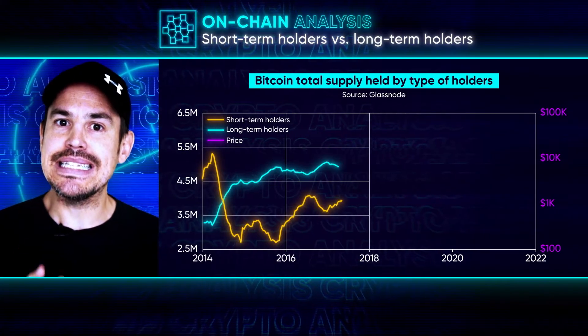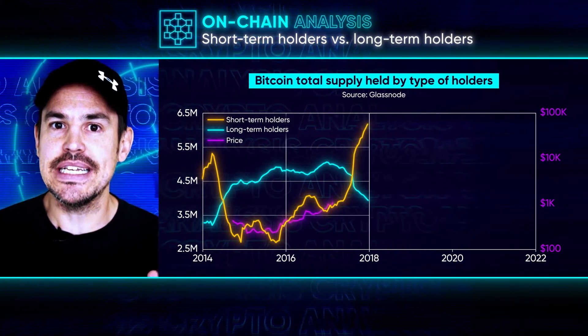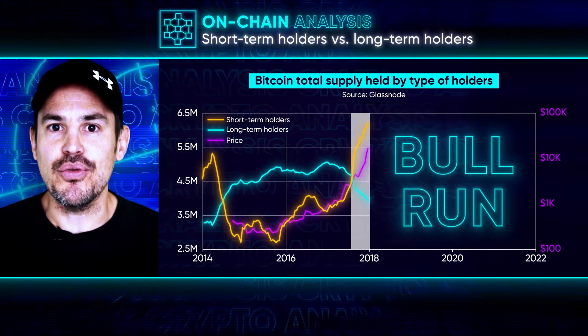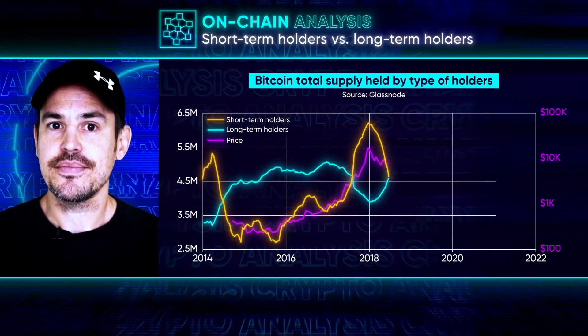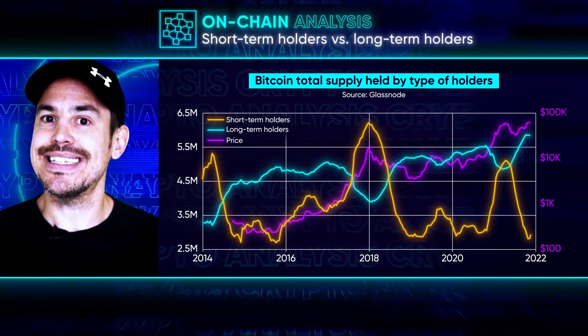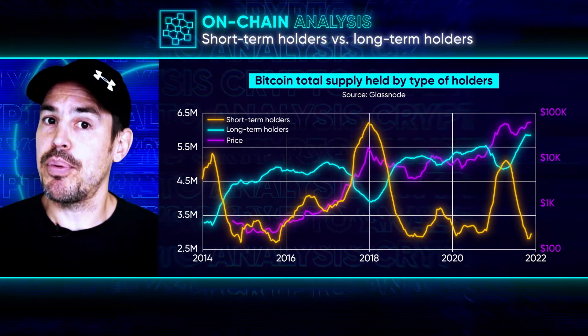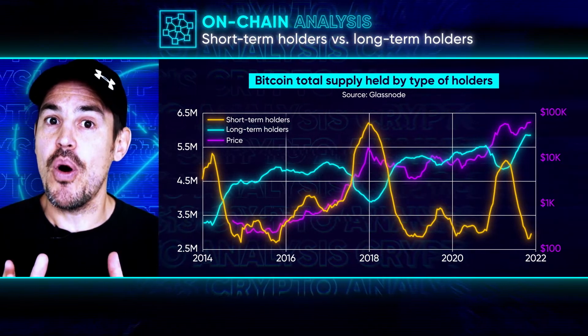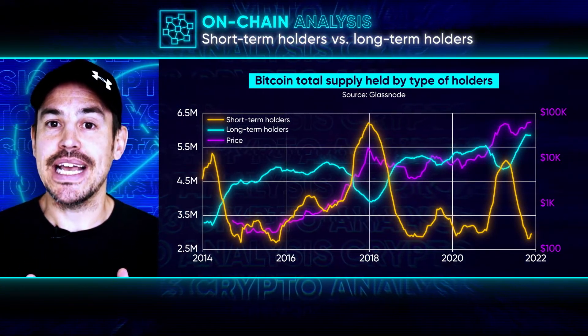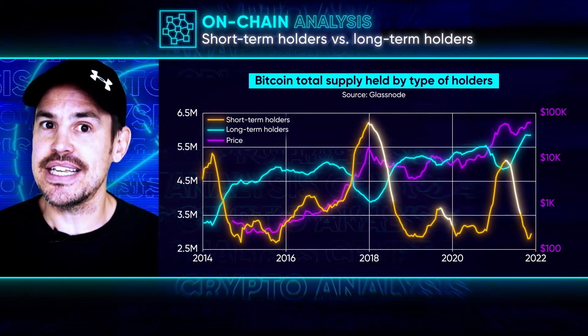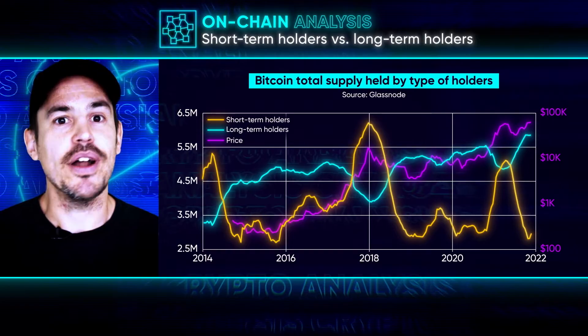We can see from previous cycles that when the Bitcoin price goes on a run, it gets more attention and lots of people start thinking it's a good time to buy. As more buyers and sellers enter the market, the price rises, as does the coverage, and it creates a bull run. Once the number of short-term holders in relation to long-term holders reaches a certain ratio, it signals we may be nearer the top. And if enough long-term holders start selling, the price starts dropping and putting pressure on the most recent entrants who bought at a high price. As soon as the pressure gets too much, the recent entrants start selling, normally at a loss, and the bull run is over.